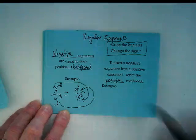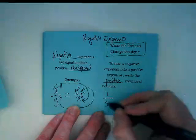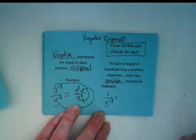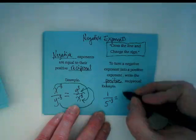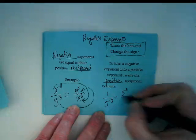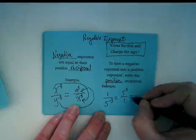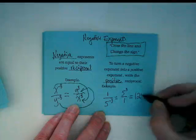One more example with numbers instead of exponents. If I have 1 over 5 to the negative third, its positive reciprocal is going to be 5 to the third power over 1. And 5 times 5 times 5 equals 125.